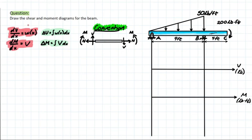The problem is: draw the shear moment diagram for the beam. We have a pin and roller supported beam with an external distributed load of triangular shape, and an external moment applied at the end. The first thing we always need to do for these problems is find our reactions. We're going to find AY for the pin, BY for the roller, and also FR to make our lives easier, created by this distributed load.